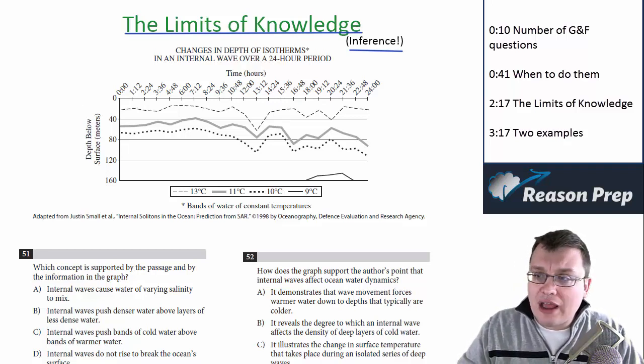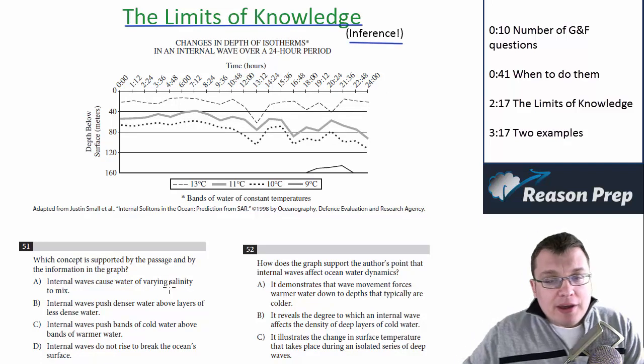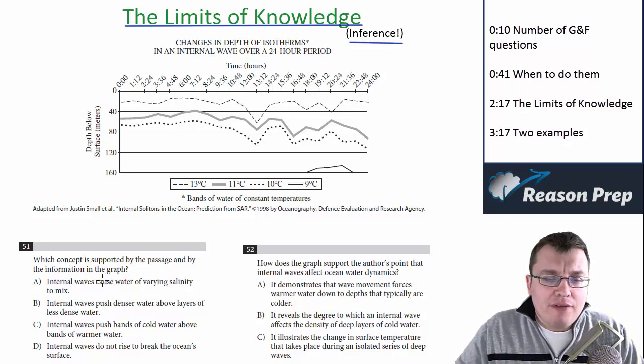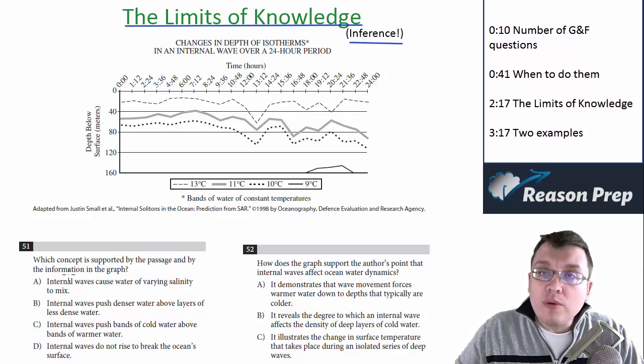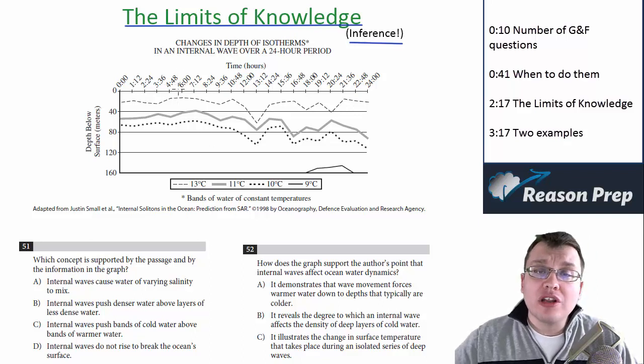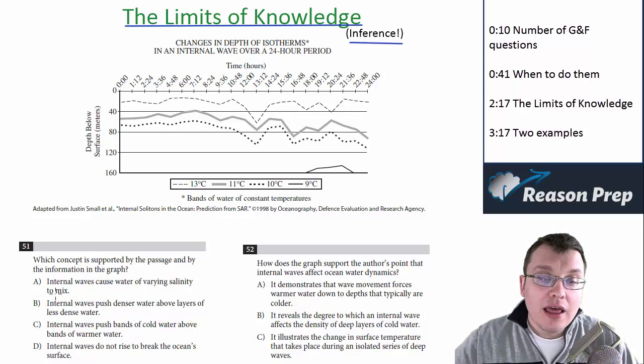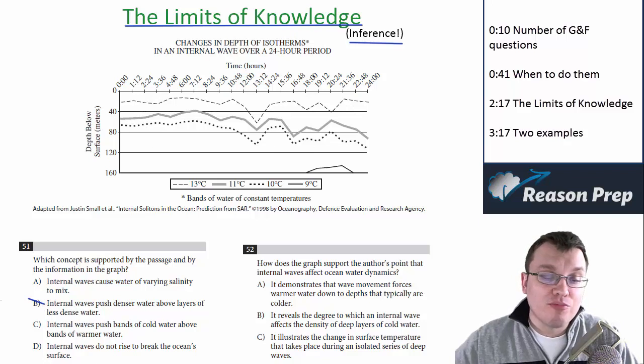Which concept is supported by the passage and by information in the graph? We're not going to worry about the passage, we're just really worried about the graph for this one. Remember what we said when we went over this question? There were certain aspects that are represented in these choices, which are not really discussed or pointed to in the graph. In other words, you couldn't look at this and infer from it choice B, because it was too far beyond the limits of the knowledge that you're given in this problem.